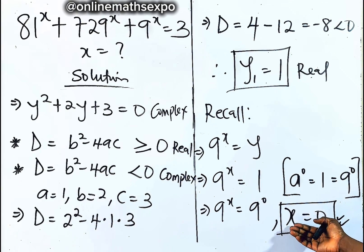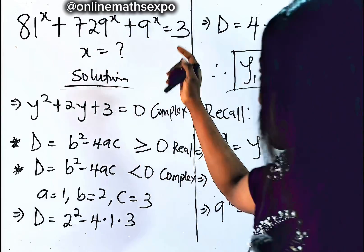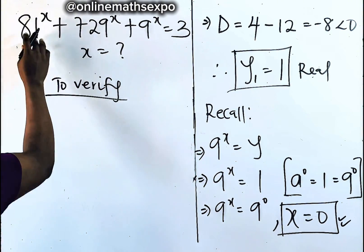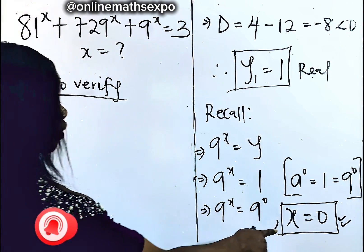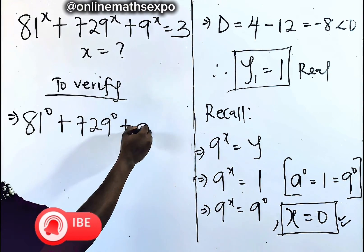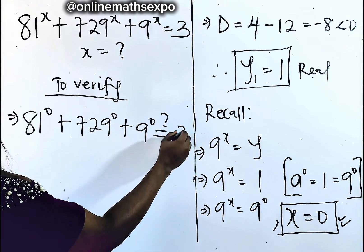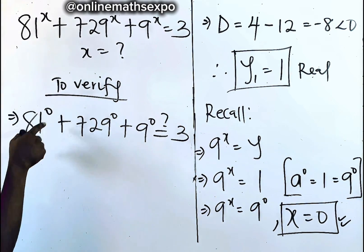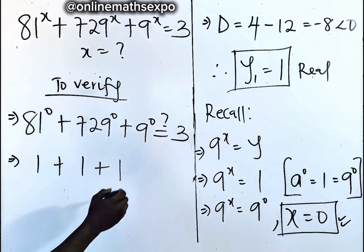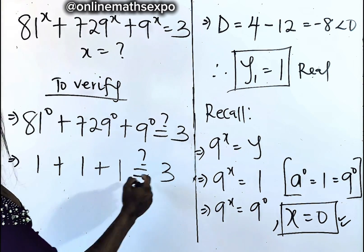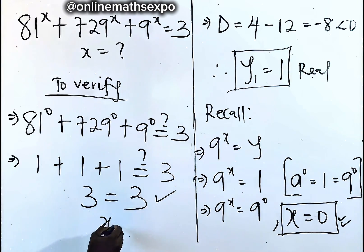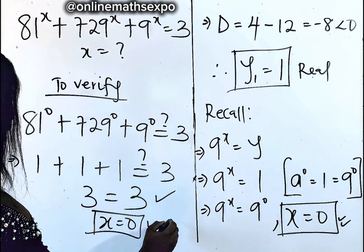Let's plug x equals 0 back into the left side to verify. We have 81 to the power of 0, plus 729 to the power of 0, plus 9 to the power of 0. Since any number raised to the power of 0 is 1, this gives us 1 plus 1 plus 1, which equals 3. And 3 equals 3, confirming that x equals 0 is absolutely correct.